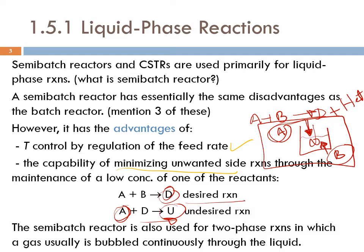The semi-batch reactor is also used for two-phase reactions in which a gas is bubbled continuously through the liquid. There is continuous input to the system but no output — the gas is introduced as a reactant and reacts with the liquid to give, for instance, a liquid product.